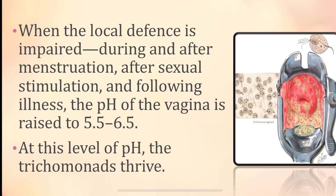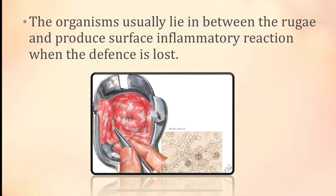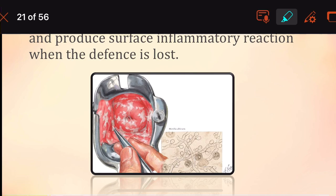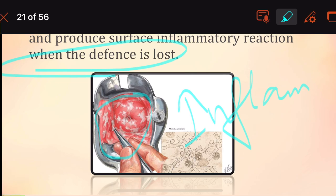Once the pH levels alter and defense is lost during and after menses and sexual stimulation, trichomonads thrive. The organisms usually lie between the rugae and produce a surface inflammatory reaction of the vagina — only when the defense is lost do these inflammatory reactions start up.